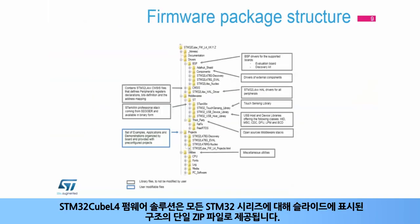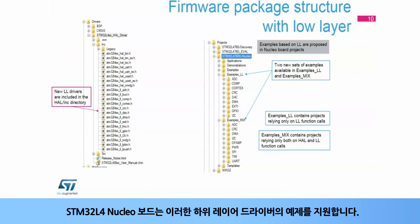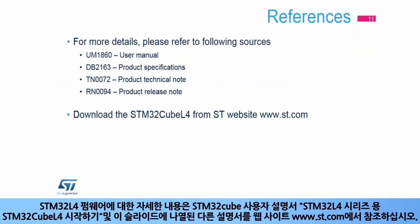The STM32Cube L4 firmware solution comes in a single zip file, having the structure shown in this slide for all STM32 series. The STM32 Nucleo board supports these examples of low-layer drivers. For more information about STM32L4 firmware, please refer to the STM32Cube user manual, Getting Started with STM32Cube L4 for STM32L4 series, as well as the other documentation listed on this slide, available on our website at www.st.com.